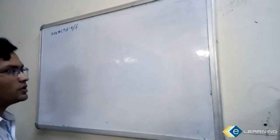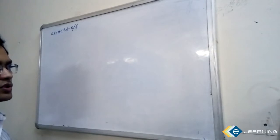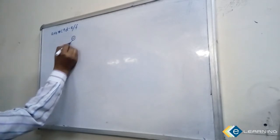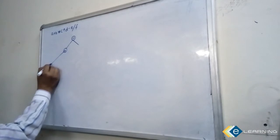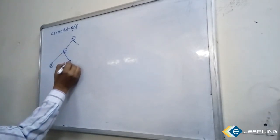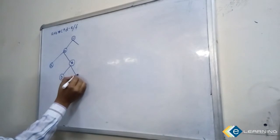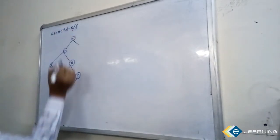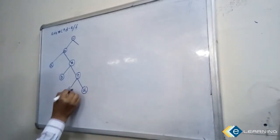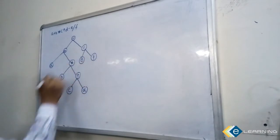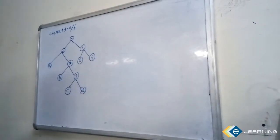In this video I am going to discuss how to find the in-order, pre-order, and post-order traversal of a tree. In the previous video we constructed an expression tree. The tree was constructed with nodes plus, A, times B, and pi C and D.